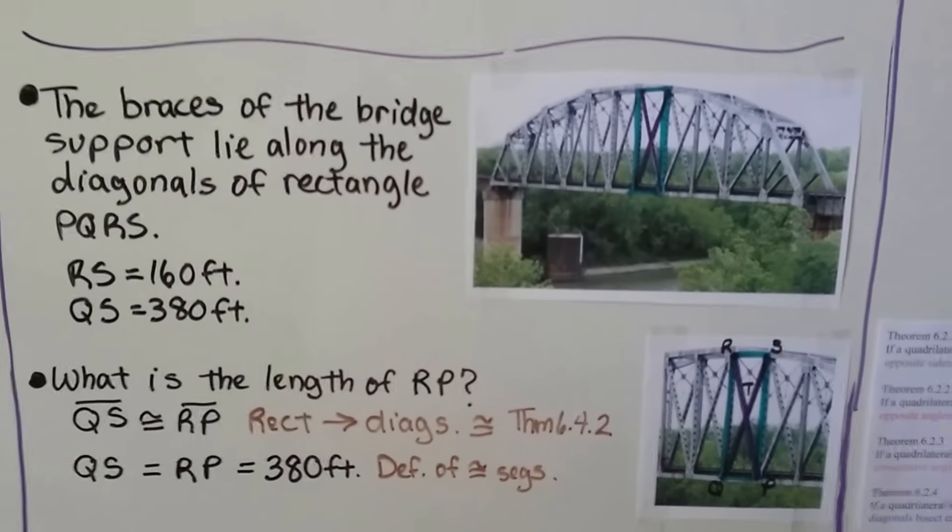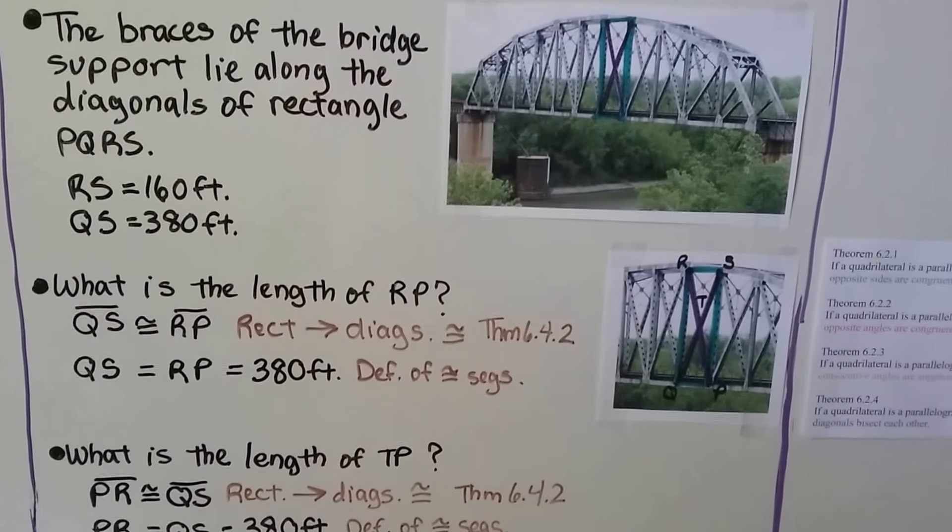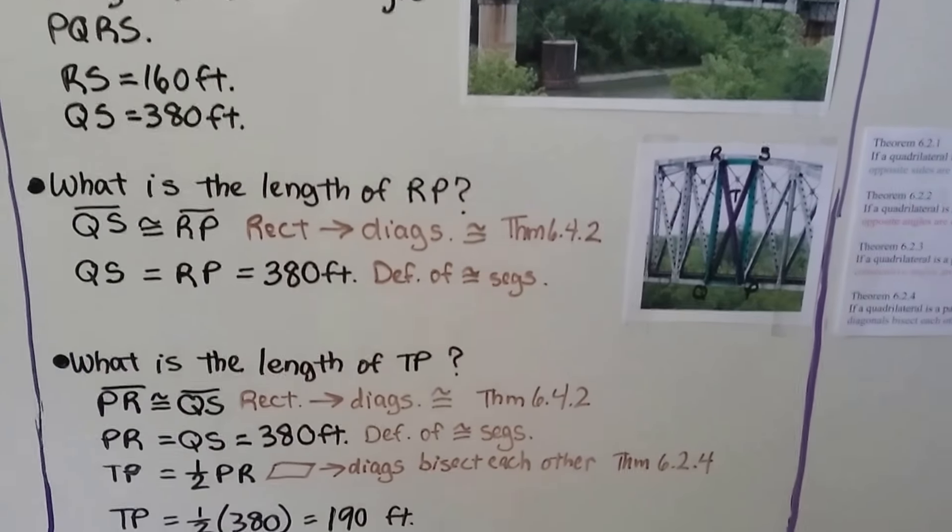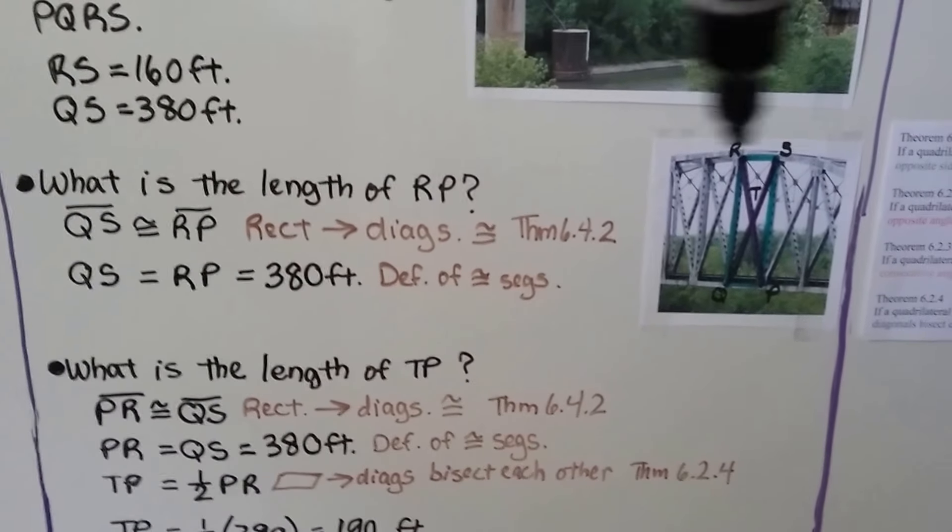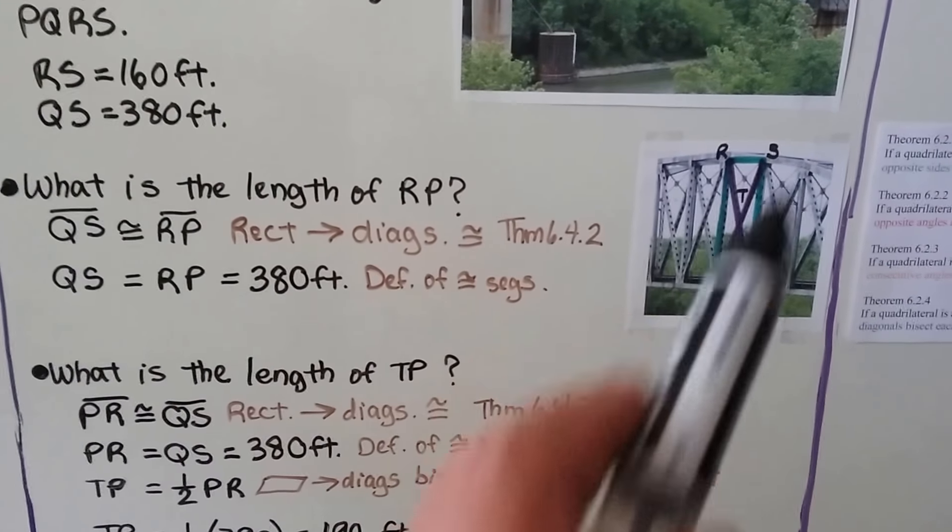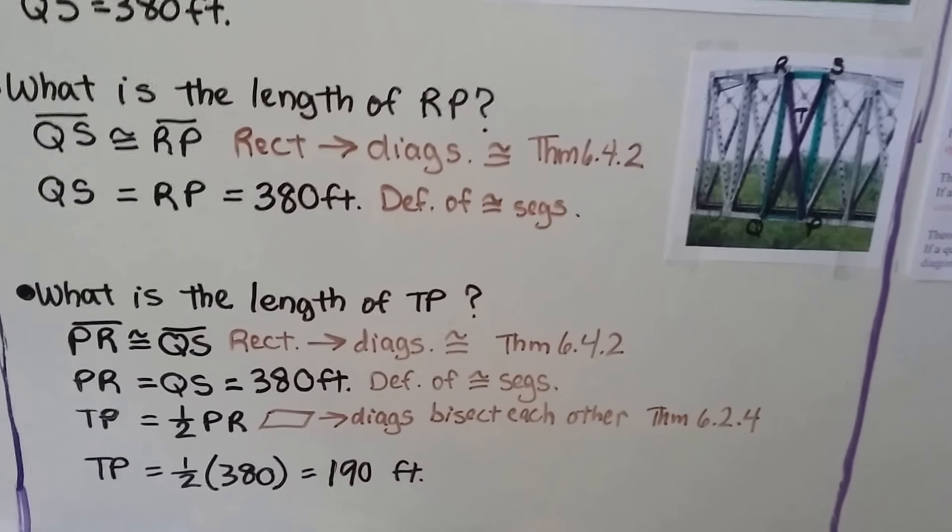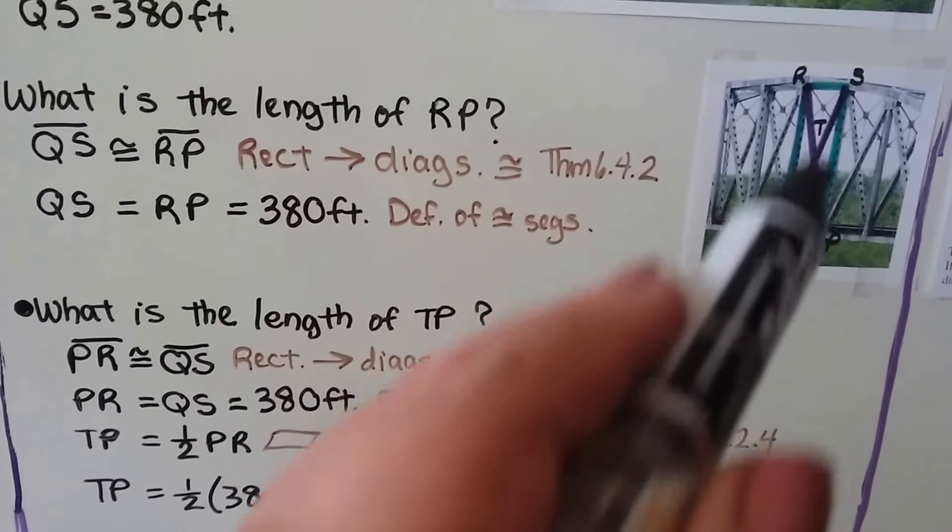And the braces of the bridge support lie along the diagonals of rectangle PQRS. And RS is equal to 160 feet. That's across the top here. And QS, that's from this corner up to here, this diagonal, is 380 feet. So what's the length of RP? That would be the other diagonal.